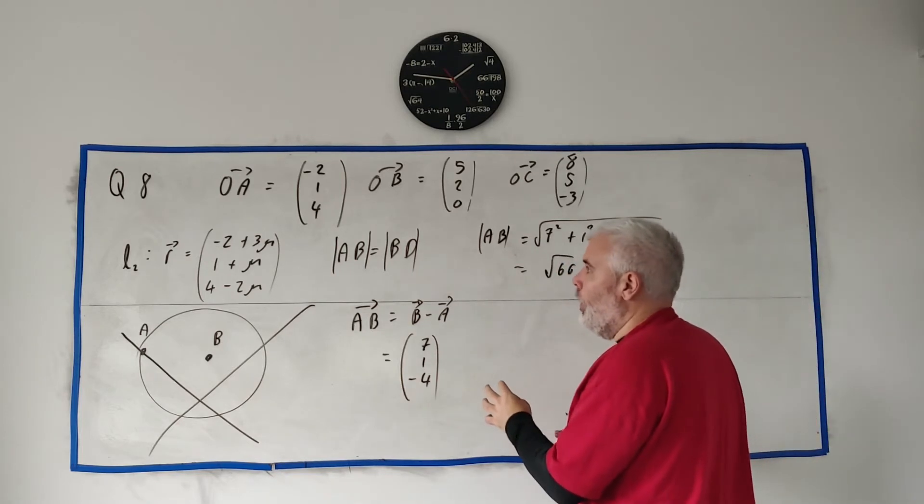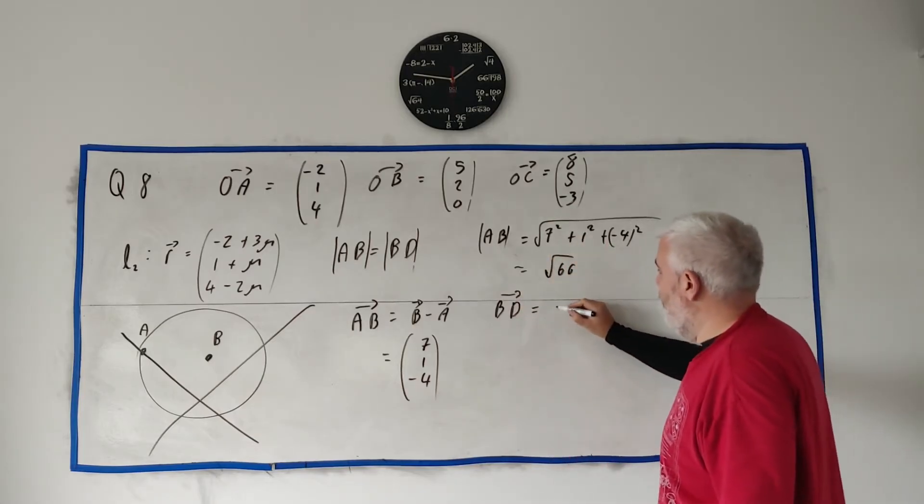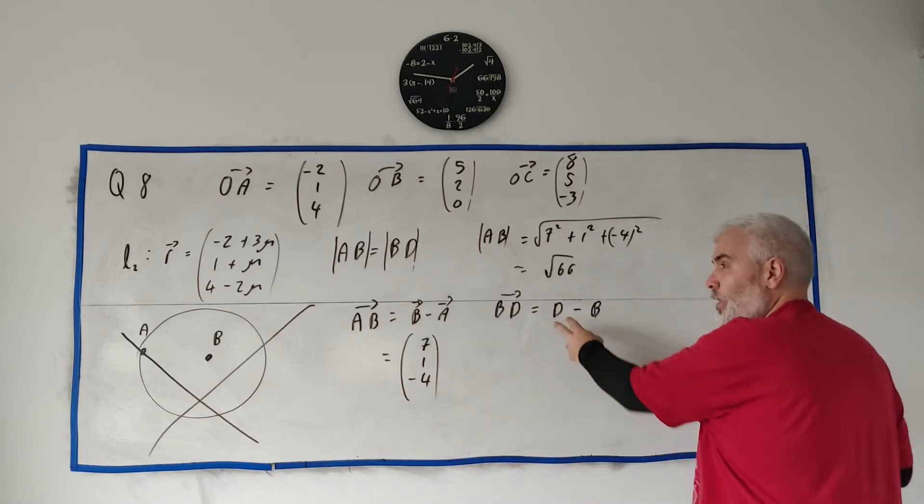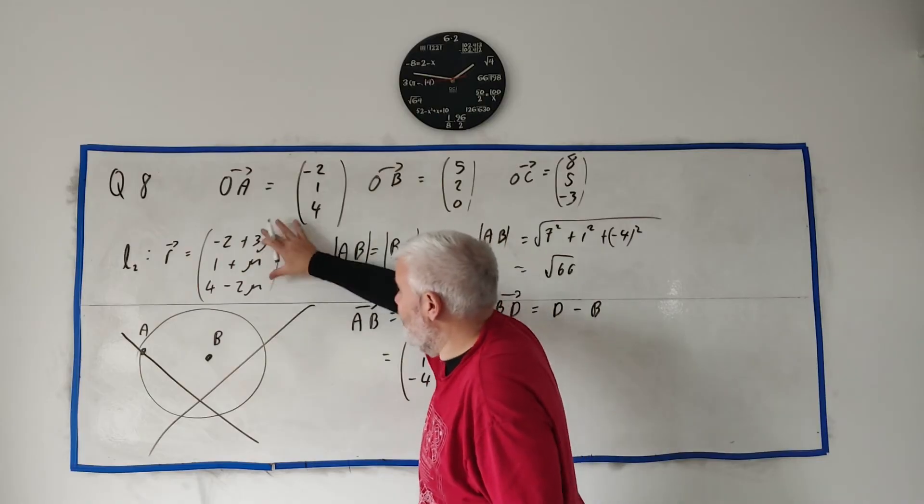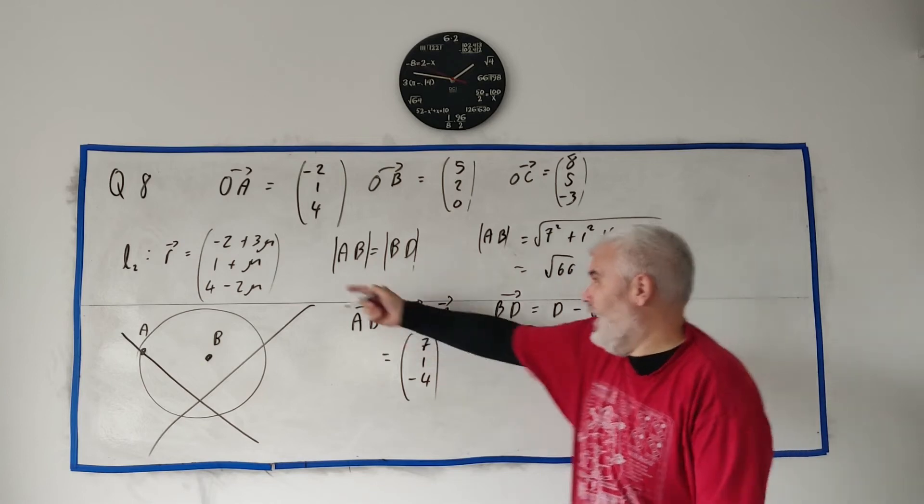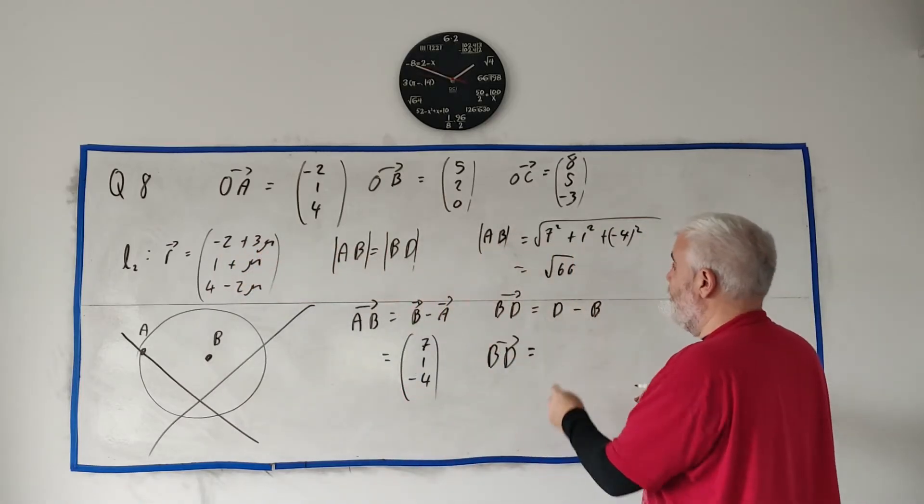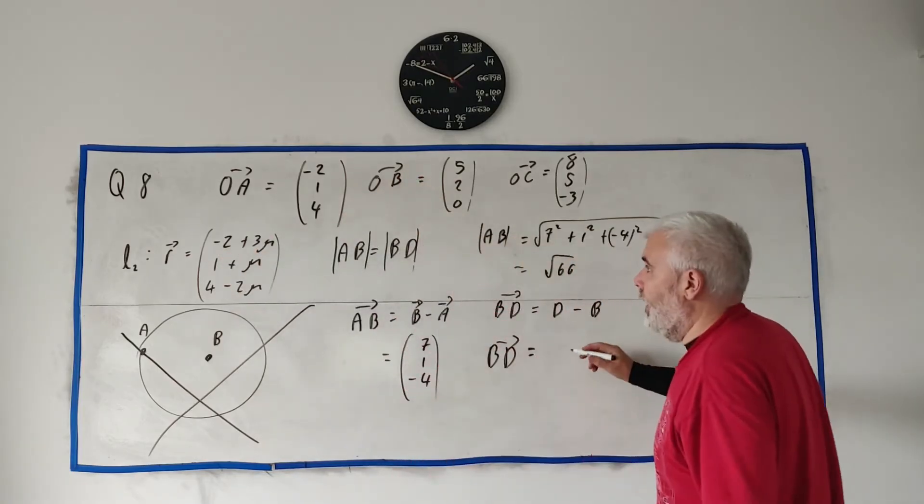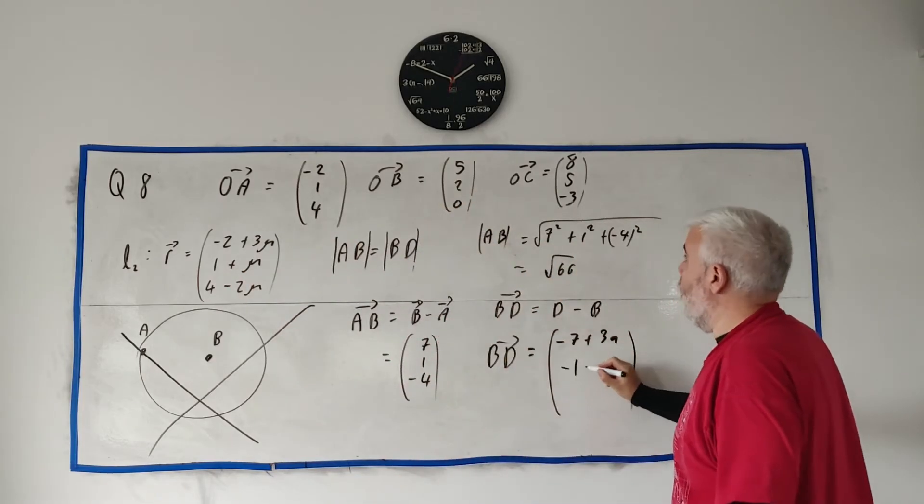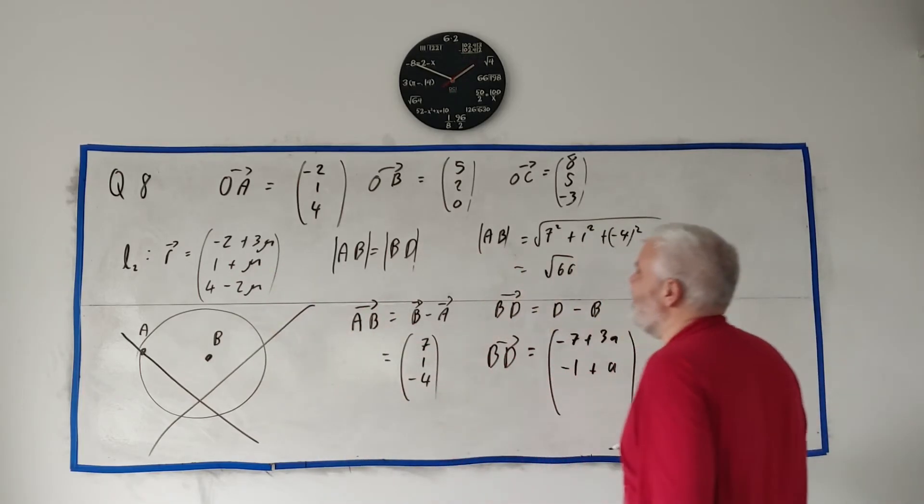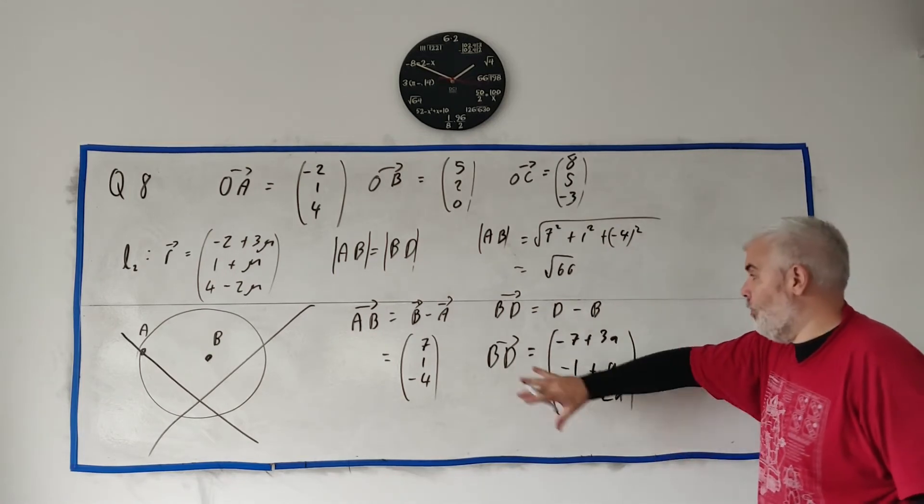But we also want to know about BD. How do we get BD? BD is equal to D minus B. Problem is we don't know D. We're looking for it. But we do. We know D is on this line. This is every point on this line. So instead of D, we can just write this here. Just for some number we don't know yet. The D vector, which is minus 2 plus 3A, take away the B vector, which is 5. So minus 2 minus 5 gets minus 7 plus 3A, 1 minus 2 is minus 1 plus A, then 4 minus 0 is 4 minus 2A. That's a vector for BD. We just don't know what this letter is yet.